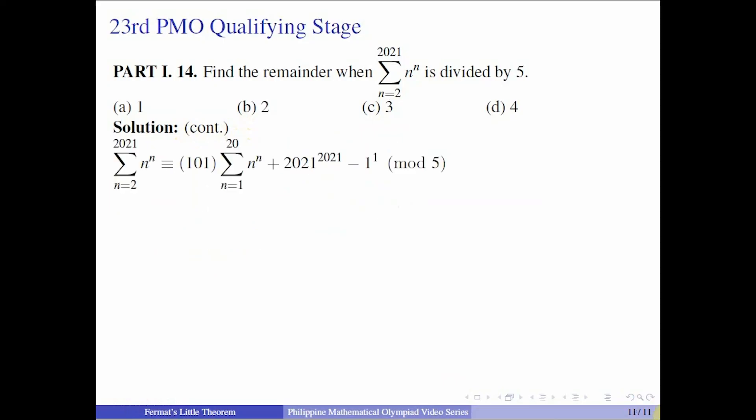Now we go back to the original problem. n^n from 2 to 2021. You have 101 sets of n^n from 1 to 20. At least in modulo 5, they are all equal. When we did this, we already know the remainder from 1 to 2020. We're going to add 2021^2021 and deduct 1^1 since it is included in the summation. From the previous computation, we know that the remainder of n^n from 1 to 20 is 4. And 2021^2021, we reduce the base modulo 5, so 1^2021. 1^2021 - 1 is just 0. And also, we can reduce 101 modulo 5, which is 1. 1 times 4, we get 4. Hence, our answer is letter D, number 4.